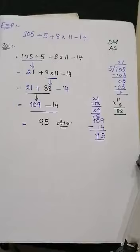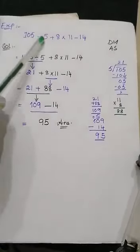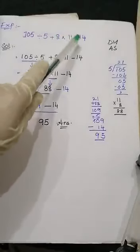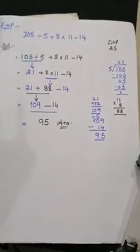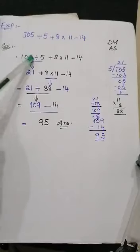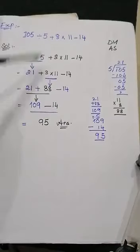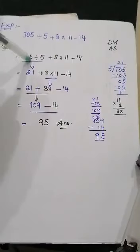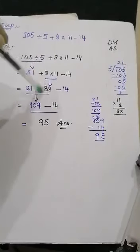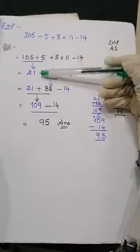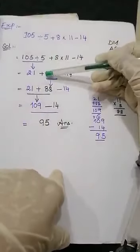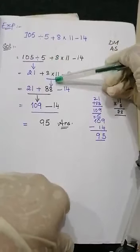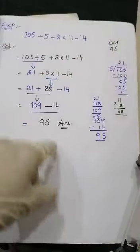Now consider another example with alternating signs. The signs present are division, addition, multiplication, and minus. The example is: 105 divided by 5, plus 8 multiplied by 11, minus 14. First, solve the division: 105 divided by 5. Working through the division: 21. So 105 divided by 5 equals 21. The plus sign, 8, and multiplied by 11 remain as they are.